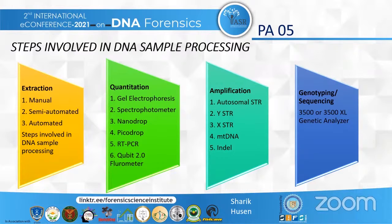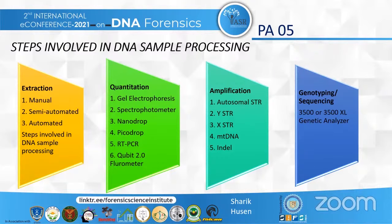The third step is amplification, accomplished through a technique known as polymerase chain reaction (PCR). PCR is a process in which millions of copies of a specific DNA sequence can be made in a matter of only a few hours. This is important for forensic DNA samples, since DNA found at a crime scene is limited in both quantity and quality. It is basically known as the molecular photocopying process.